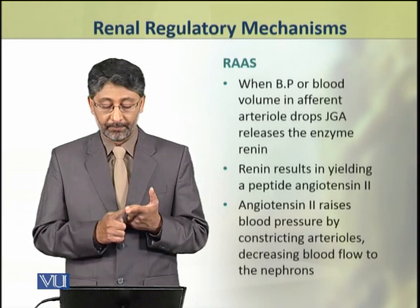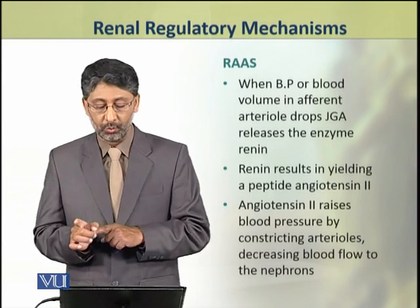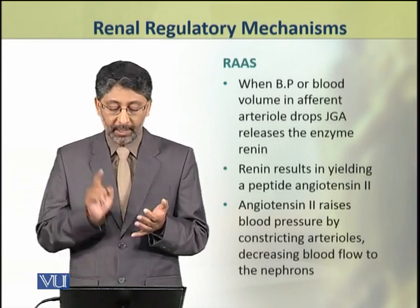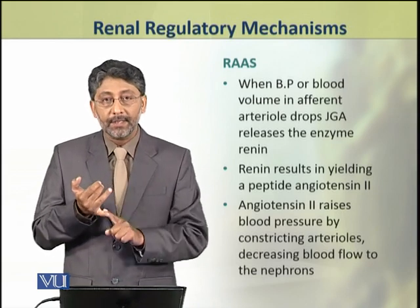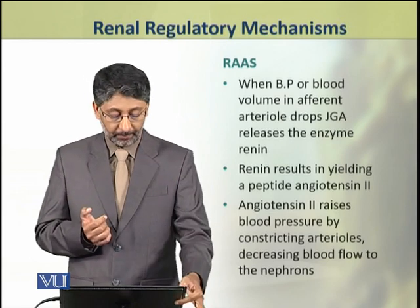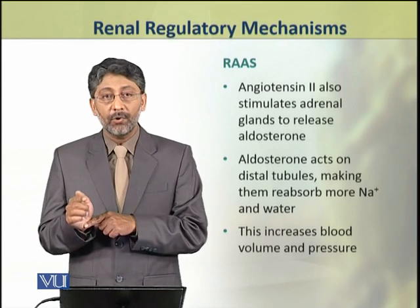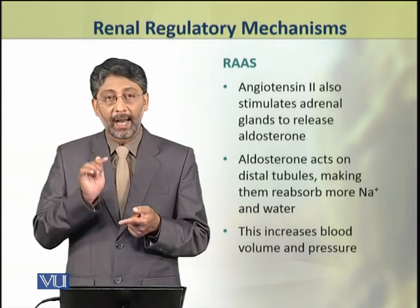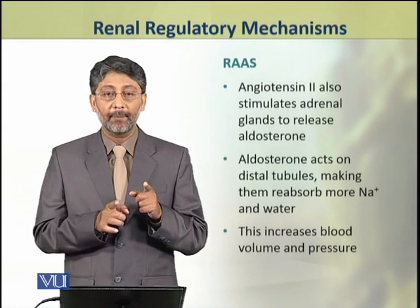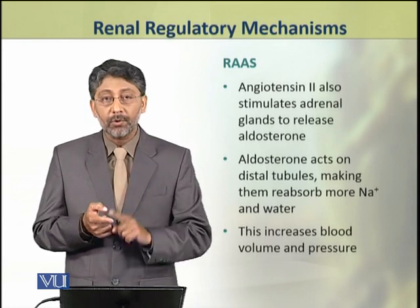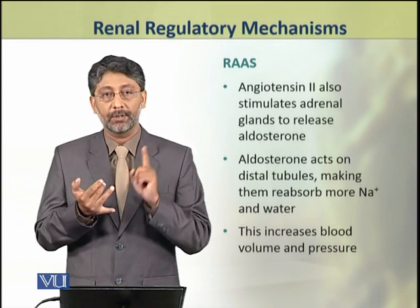Renin yields a peptide called angiotensin 2. Angiotensin 2 raises blood pressure by constricting the arterioles, thereby decreasing blood flow to the nephron. Angiotensin 2 also stimulates the adrenal glands to release aldosterone. Aldosterone acts on the distal tubules, making them reabsorb more sodium and water. As a result, blood volume and pressure increase.